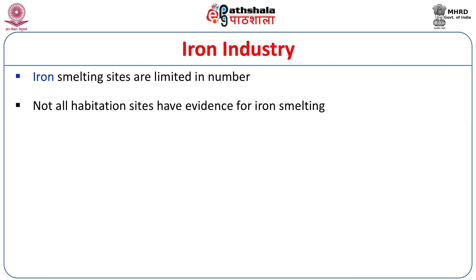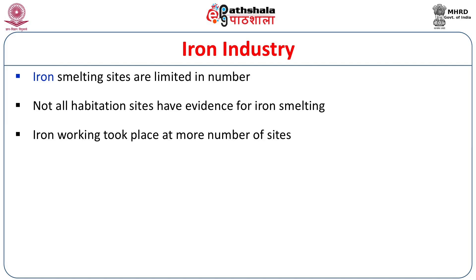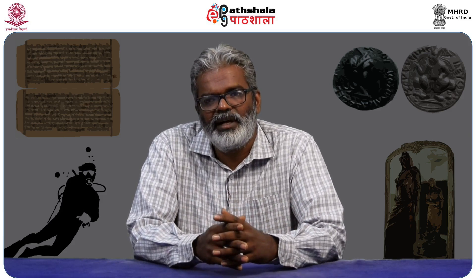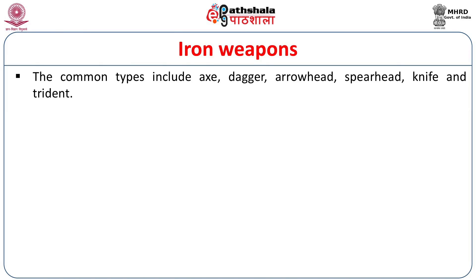We get plenty of evidence for iron smelting found in different areas, though it did not take place at all sites — only select sites were smelting iron and then transporting it to different areas. In megalithic burials, we get a lot of iron objects as ritual deposits, while in habitation sites they were recycled and reused. Iron objects are found in large numbers in burials and limited numbers in habitations. We have a lot of varieties of iron weapons like axe, dagger, arrowhead, spearhead, knife, and trident, which are also described in the literature.